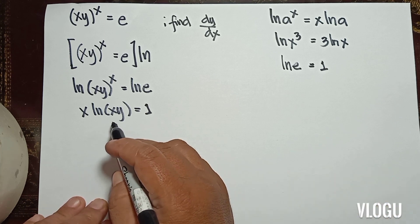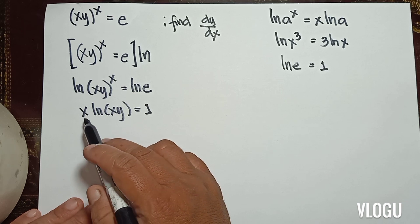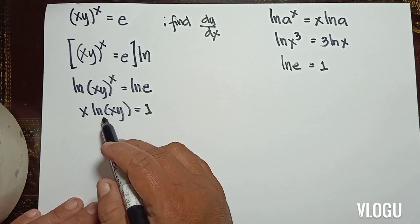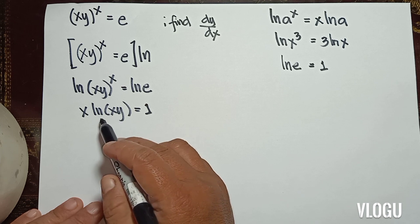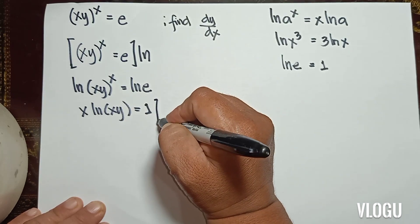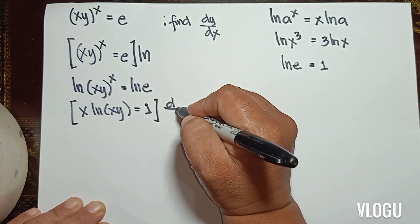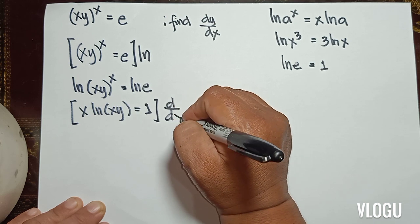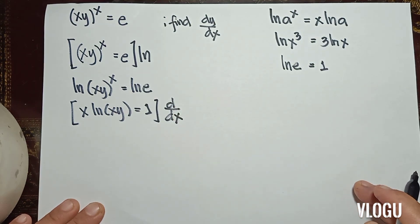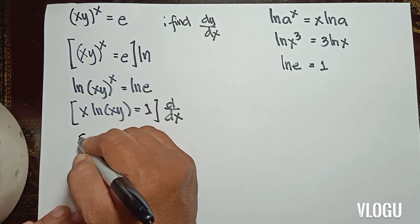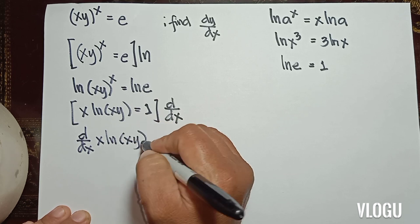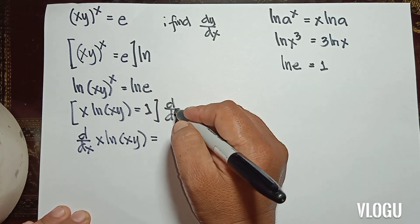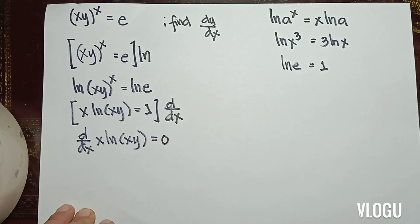Now we find the derivative of both sides. We need d/dx of x·ln(xy). The derivative of 1 is 0. So this becomes the derivative of a product.